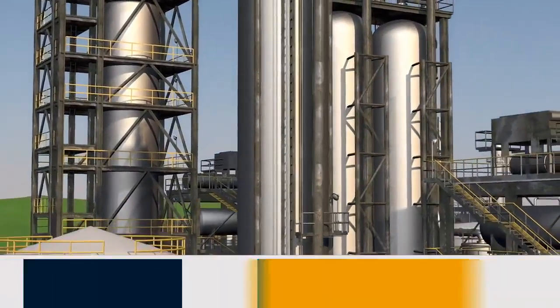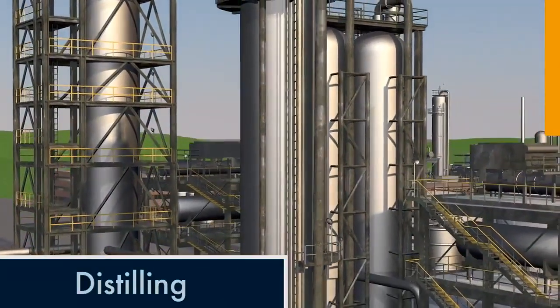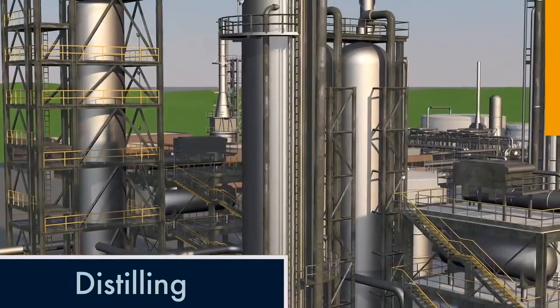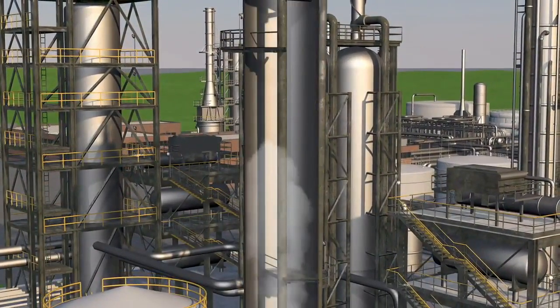Refining begins with a process called distilling. After oil is superheated, it becomes vapor. The vapor is fed into the distillation unit.